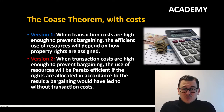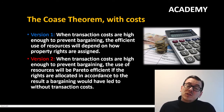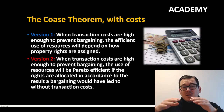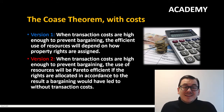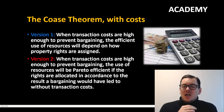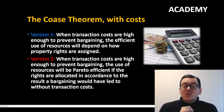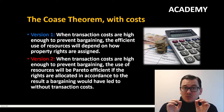The first version is from Kuta and Olin: when transaction costs are high enough to prevent bargaining, the efficient use of resources will depend on how property rights are assigned. So if transaction costs are too high for private bargaining, property rights will have an effect. Another version from Ida and Saban stipulates that when transaction costs are high enough to prevent private bargaining, the use of resources will be Pareto efficient if the rights are allocated in accordance with the result bargaining would have led to without transaction costs.